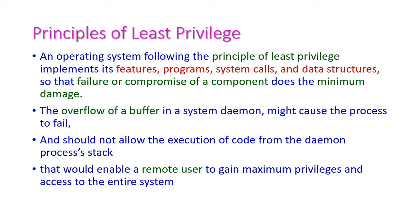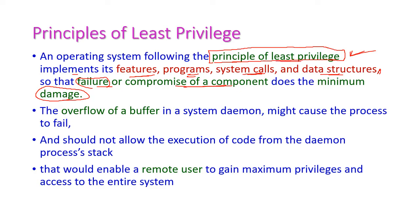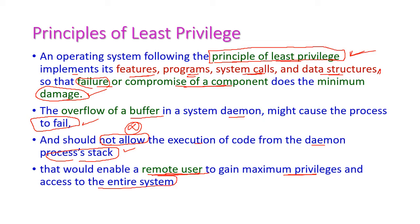When designing an operating system, it should follow the principle of least privilege, which implements its features — programs, system calls, and data structures — so that the failure or compromise of a component does minimum damage. If the privilege is least, the damage will also be minimum. An overflow of a buffer in the system could cause the process to fail, and we should not allow the execution of code from the process stack. Otherwise, it will enable a remote user to gain maximum privilege and access the entire system, which would cause very big damage.